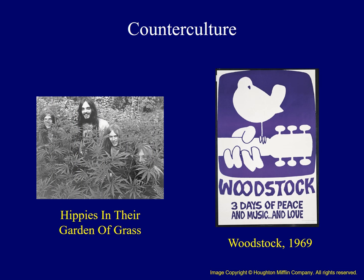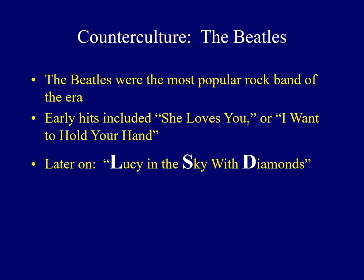Possibly the greatest event symbolizing the counterculture movement took place over three days in August of 1969: Woodstock, in upstate New York, where more than 400,000 young people lived in the rain and mud listening to live music. The Beatles were clearly the most popular rock band of the era, and their evolution embodied the counterculture. Early on they had shorter hair and sang songs like She Loves You; later in the decade they wore long hair and bushy beards and had hits like Lucy in the Sky with Diamonds, which some argued glorified acid use.